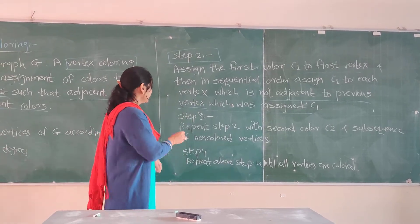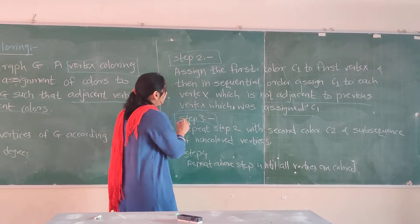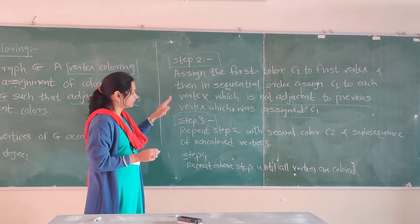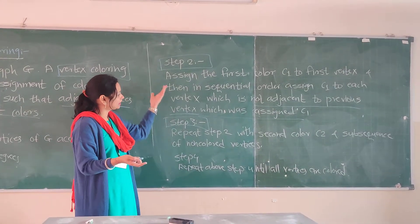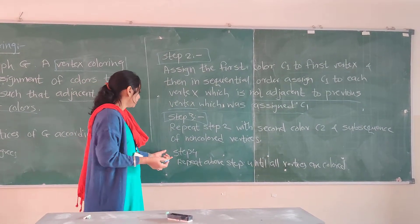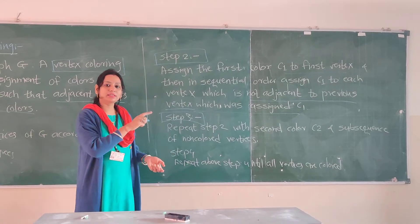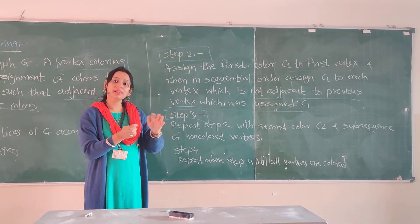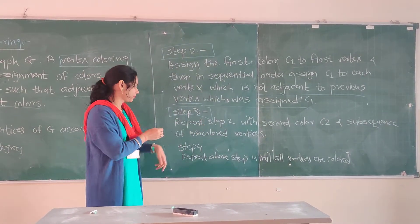Then in Step 3, repeat the above Step 2 with the second color C2, and the process is the same. Repeat this process till all the vertices are getting colored.